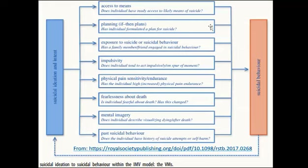Next, impulsivity — does the individual tend to act impulsively on the spur of the moment? It is very important in your assessment to determine any kind of brain functioning, such as traumatic brain injury, which may affect the frontal lobe in terms of impulsivity, anger, and impulse control issues. Then, physical pain or sensitivity endurance — has the individual high increased physical pain endurance? This is also a contributing factor to suicidal behavior in terms of feeling entrapped with pain that can never seem to be relieved. Then fearfulness about death — is the individual fearful about death, and has this changed in terms of their outlook? Mental imagery — does the individual describe visualizing dying or after-death experiences? And last, past suicidal behavior — does the individual have a history of suicide attempts or self-harm?